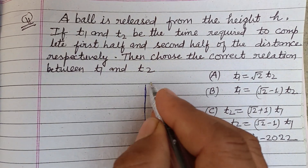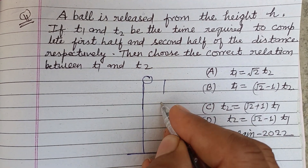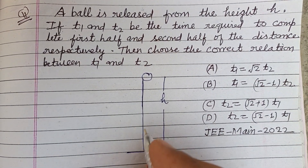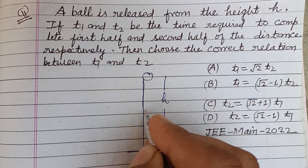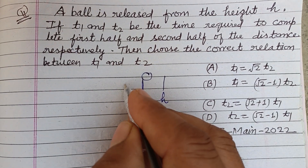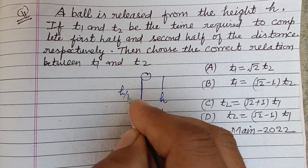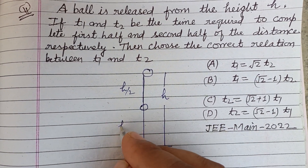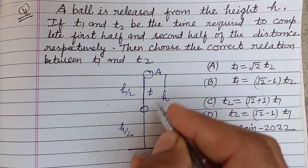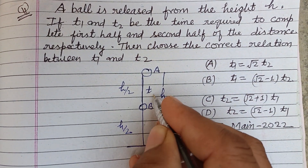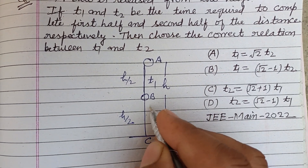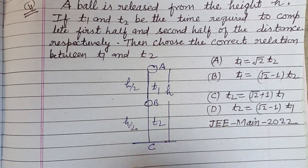Here we have a ball at height h from the earth's surface. It falls and we divide the path into two parts — h/2 and h/2. The time for the first part, A to B, is t1, and the time for the second part, B to C, is t2.